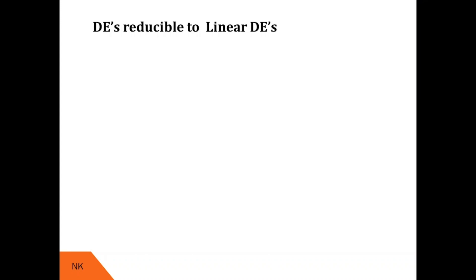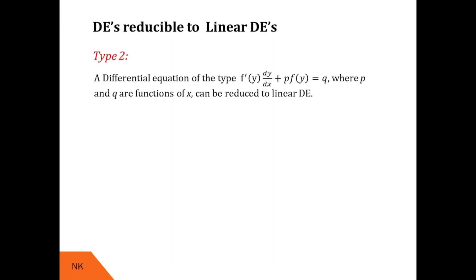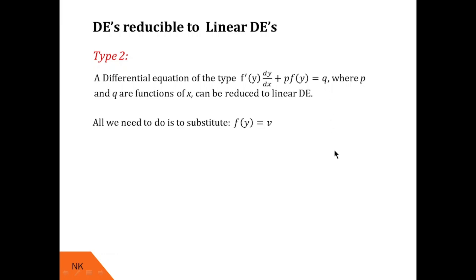Let us see how Type 2 differential equations look like. Under this type, the differential equation looks like: f'(y) · dy/dx + P · f(y) = Q, where P and Q are functions of x. Note that whatever function of y you have in the second term, its derivative appears in the first term along with dy/dx, and on the RHS you just have Q as a function of x.